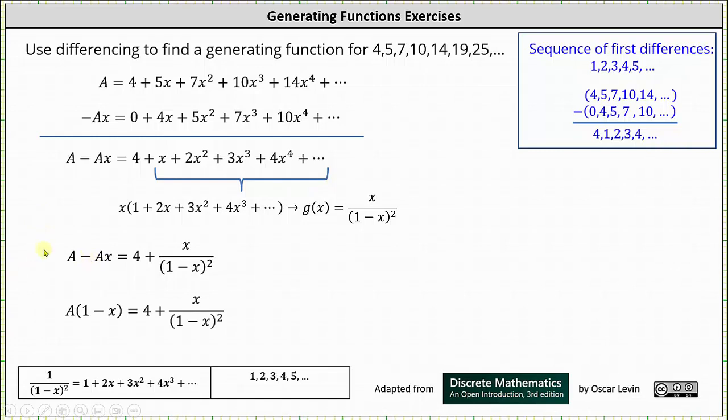For the next step, we can factor A from the left, which gives us A times the quantity 1 minus x. And for the last step, we multiply both sides of the equation by 1 divided by the quantity 1 minus x. Distributing, we have 4 divided by the quantity 1 minus x plus x divided by the cube of 1 minus x.